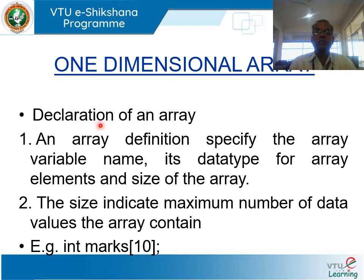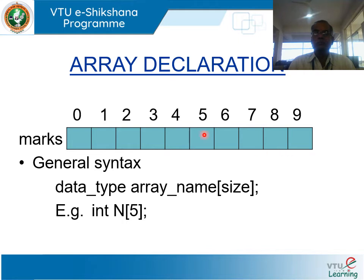Declaration of an array. The declaration of a one-dimensional array specifies the array variable name, its data type for array elements, and the size of the array. The size indicates the maximum number of data values the array contains. Example: int marks[10], where int is the data type, marks is the name of the array, and 10 is the maximum number of elements of type integer. The general syntax is: data_type array_name[size]. Example: int n[5], where n is an array that contains 5 integer elements.